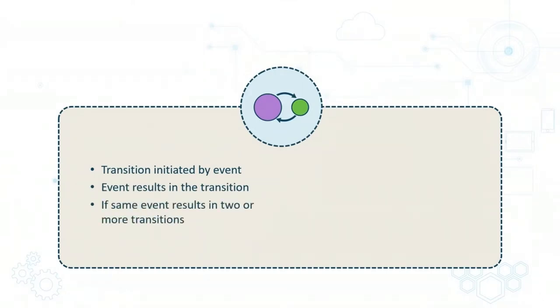If the same event results in two or more transitions, then we can use a qualifier or a guard condition.